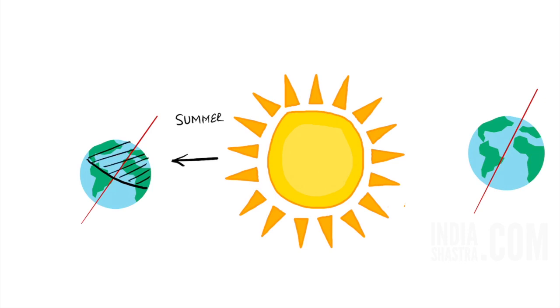There is no need to be confused. You have to remember a simple concept. The part which is inclined towards Sun gets maximum heat and in that part, there is a summer season.